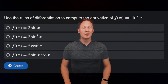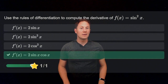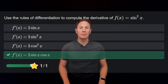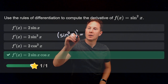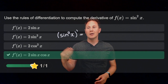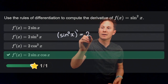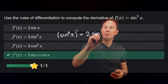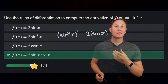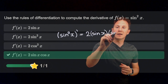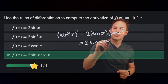Use the rules of differentiation to compute the derivative of f of x equals sine squared of x. The derivative equals 2 times sine of x times cosine of x. We obtain this using the chain rule first. The outer function is the squaring function and the inner function is the sine function. We differentiate the squaring function using the power rule — bringing the exponent down and reducing the power by one — giving sine of x, and then multiply by the derivative of the inner function, sine of x, which according to a basic derivative is cosine of x. Hence the derivative is 2 times sine of x times cosine of x.